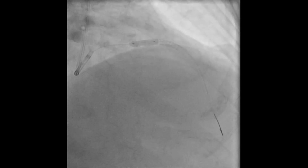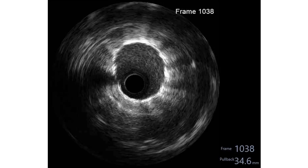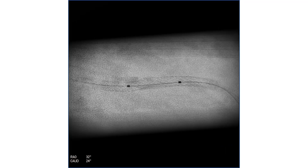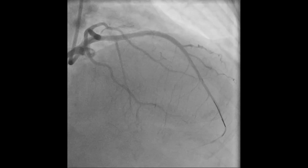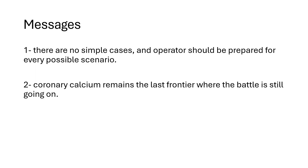Post-dilatation was done by NC balloon 3.5 at the proximal part. IVUS showed good stent expansion, and this shows how a stent graft looks on IVUS with significant reverberation. This is the stent boost after the stent graft with better expansion, and this is the final angiographic result. The message from this case is that there are no simple cases and operators should be prepared for every possible scenario. Coronary calcium remains the last frontier where the battle is still going on.